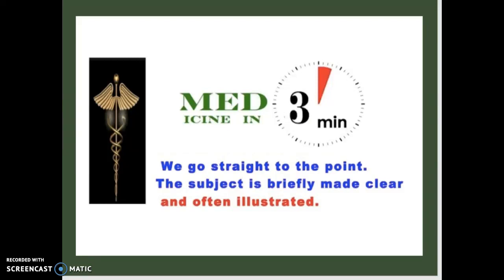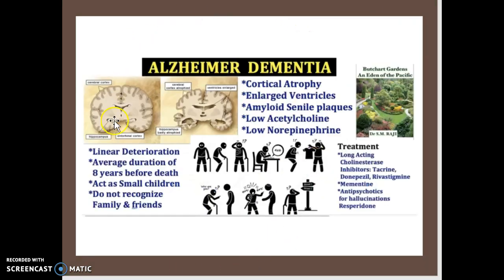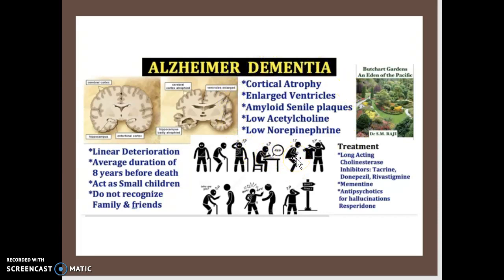Welcome back to Medicine in 3 Minutes. Today we're going to be talking about Alzheimer's. We're going to get straight to the point, keeping the subject clear, brief, and illustrated. Here is a brief summary of what we'll cover: how the brain changes physically, chemically, and neurologically; the treatments; the reasons why Alzheimer's develops; and the traits of people who have Alzheimer's.